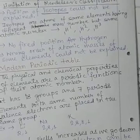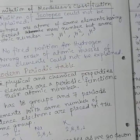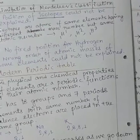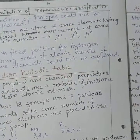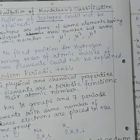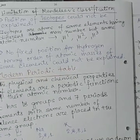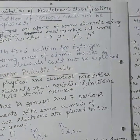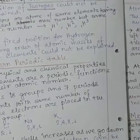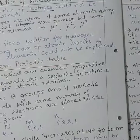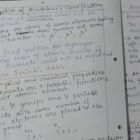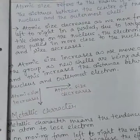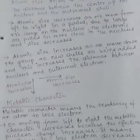The number of shells increases as we go down a group. The maximum number of electrons that can be filled in a shell is given by 2N², where N is the shell number. When N = 1 (K shell): 2 × 1² = 2 electrons maximum. When N = 2 (L shell): 2 × 2² = 8 electrons. When N = 3 (M shell): 2 × 3² = 18 electrons, and so on.